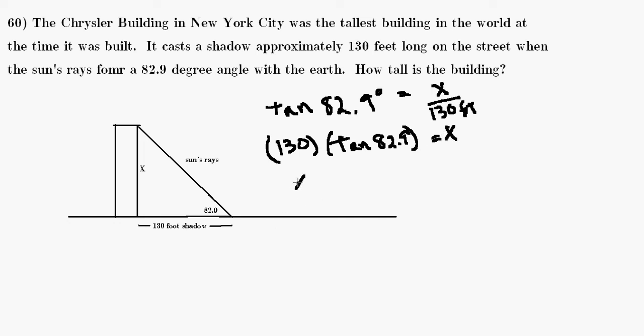So x is going to be approximately—and now we take our calculator, making sure we're in degree mode. We simply type in 130 times the tangent of 82.9, close parenthesis, hit enter, and we find out that x is approximately 1043.702 feet.